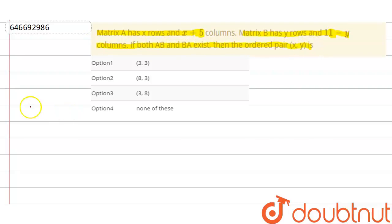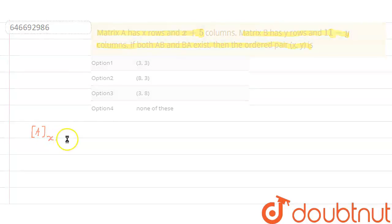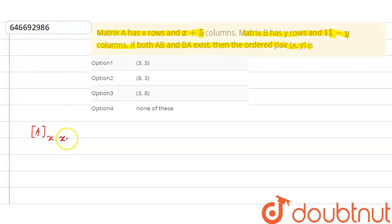You have a matrix A which has an order X by X plus 5, and you have another matrix B which has an order Y by 11 minus Y.